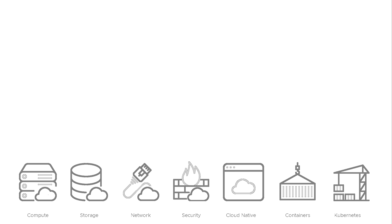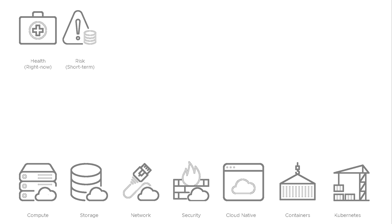Once we've got things running, we need to be able to monitor and manage them. We need to look at health — how the system is performing right now — short-term risks, meaning things that are going to go wrong if we don't act soon, and then overall long-term considerations like efficiency. Health, risk, and efficiency are just different ways of looking at things through different time periods.